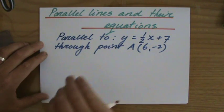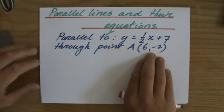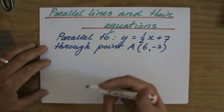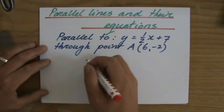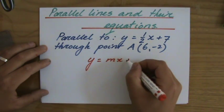I have to construct the equation, and whenever I have to construct an equation of a line, I write down y equals mx plus c. That's the gradient intercept form, where m is the gradient and c is the y-intercept.